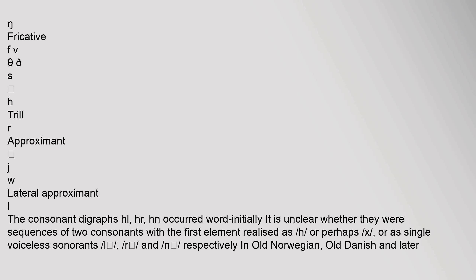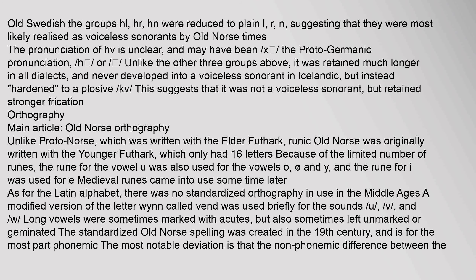The consonant digraphs HL, HR, and HN occurred word-initially. It is unclear whether they were sequences of two consonants with the first element realized as H or perhaps as single voiceless sonorants L, R, N respectively. In Old Norwegian, Old Danish and later Old Swedish, the groups HL, HR, and HN were reduced to plain L, R, N, suggesting that they were most likely realized as voiceless sonorants by Old Norse times. The pronunciation of HV is unclear, and may have been the Proto-Germanic pronunciation H, or unlike the other three groups above, it was retained much longer in all dialects and never developed into a voiceless sonorant in Icelandic, but instead hardened to a plosive KV. This suggests that it was not a voiceless sonorant but retained stronger frication.